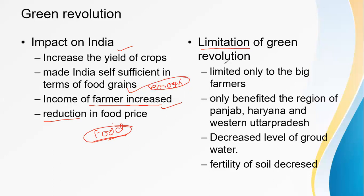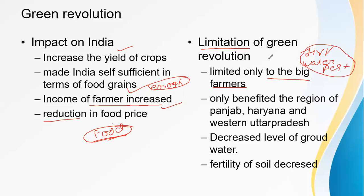Now, what are the limitations of the Green Revolution? The benefits of the Green Revolution were limited only to big farmers. As you know, the Green Revolution requires things like HYV seeds, large amounts of water, and pesticides — all of which need money. Small farmers did not have this money. It was the big farmers who had it, so mostly big farmers were benefited.